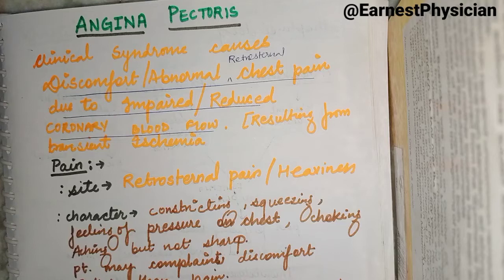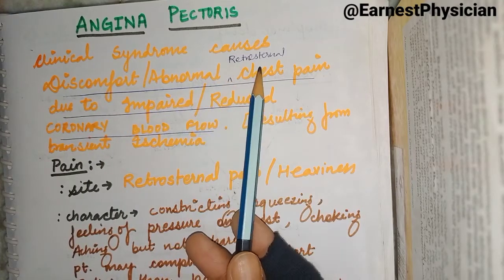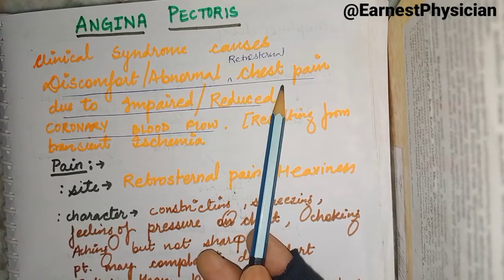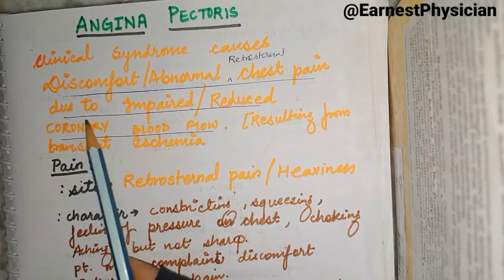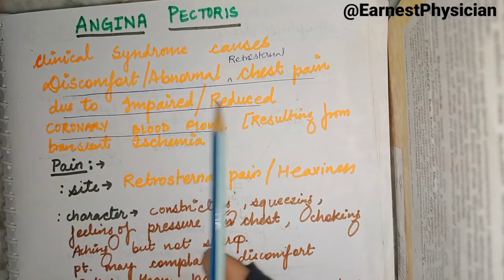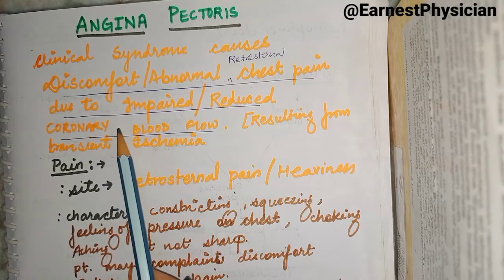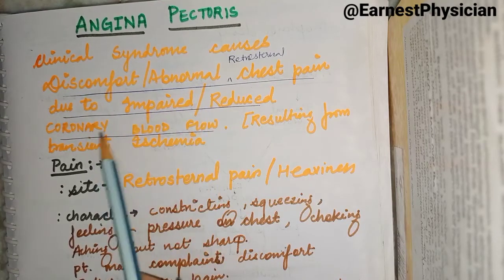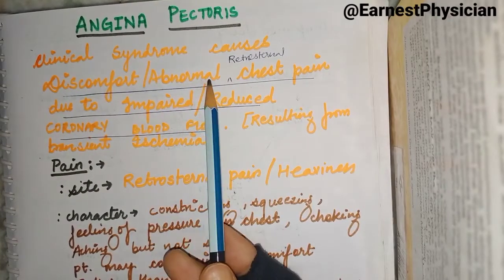First, we will look at the definition. Angina pectoris is a clinical syndrome characterized by abnormal retrosternal chest pain — that is, chest pain behind the sternum. This occurs due to impaired or reduced coronary blood flow to the heart's blood vessels. When blood flow to the vessels is decreased or impaired, the result is abnormal chest pain behind the sternum.